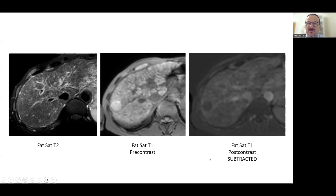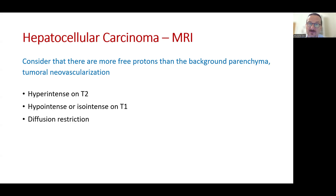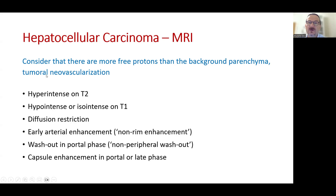Hepatocellular carcinoma contains more free protons than compared to the background parenchyma, which makes it hyper-intense on T2. It is hypo- or iso-intense on T1 and, like other tumors, shows diffusion restriction. Hepatocellular carcinoma has a typical contrast enhancement pattern, which is non-rim early arterial enhancement and non-peripheral washout in the portal phase. The capsule may show enhancement in the portal or late phase.